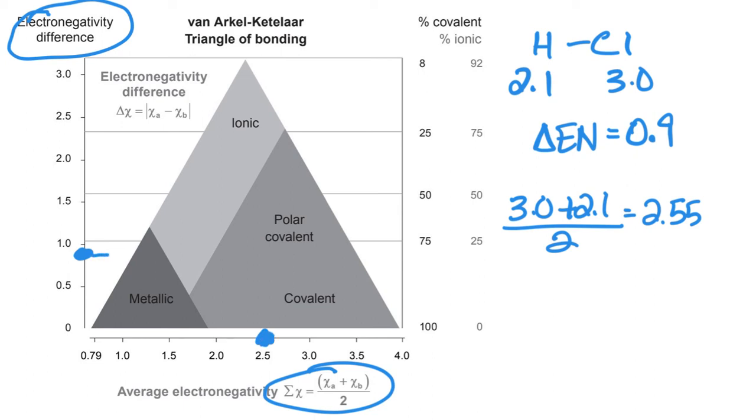If we find where those two points meet, you can see that it kind of sits in this polar covalent section of our diagram. Now, if we continue to trace that over and looked at our other y-axis here, this gives us the percent that's covalent, percent ionic. So it gives us how much of that bond has ionic character, how much has covalent character. So it's sitting around, I don't know, let's say about 80% covalent and 20% ionic.